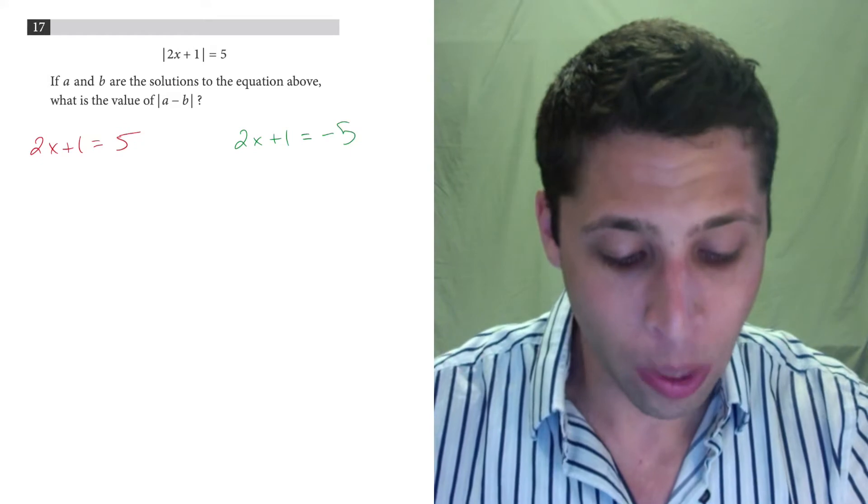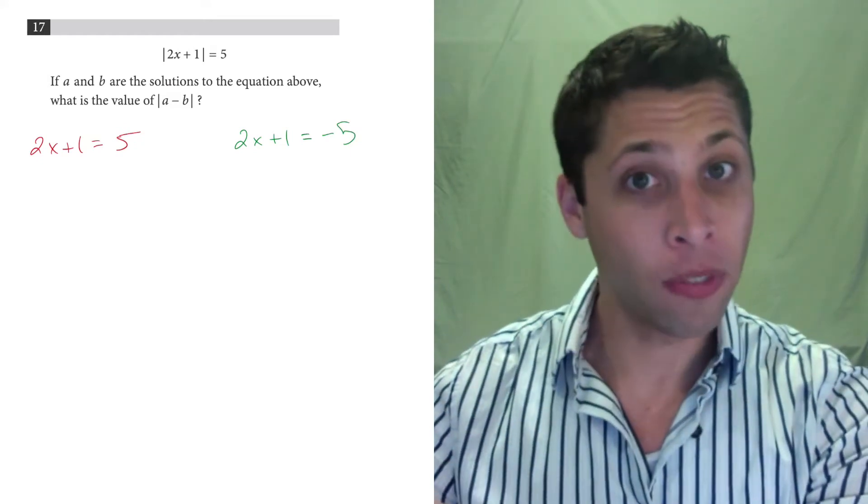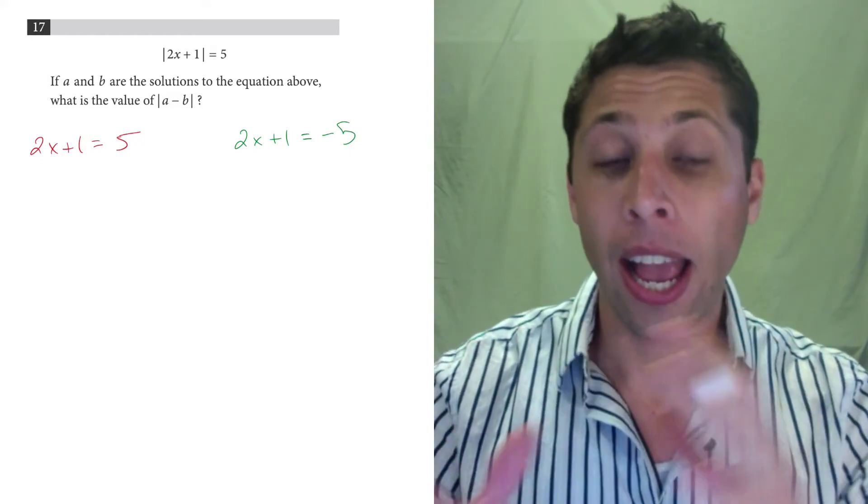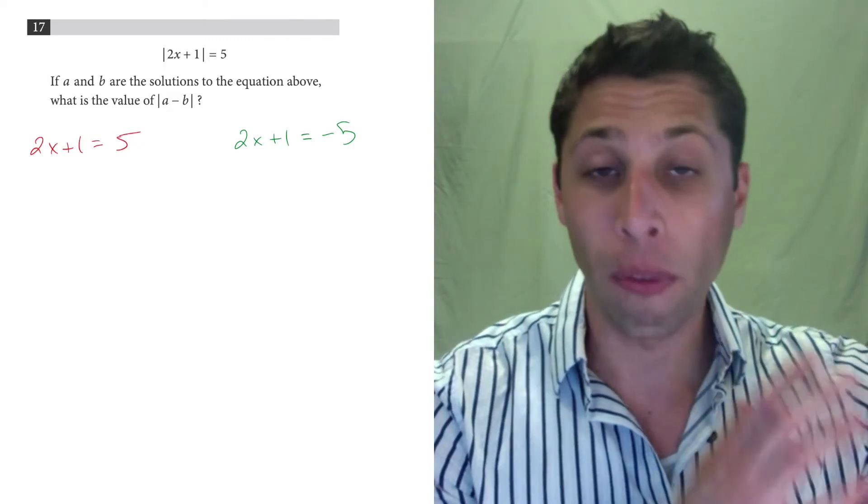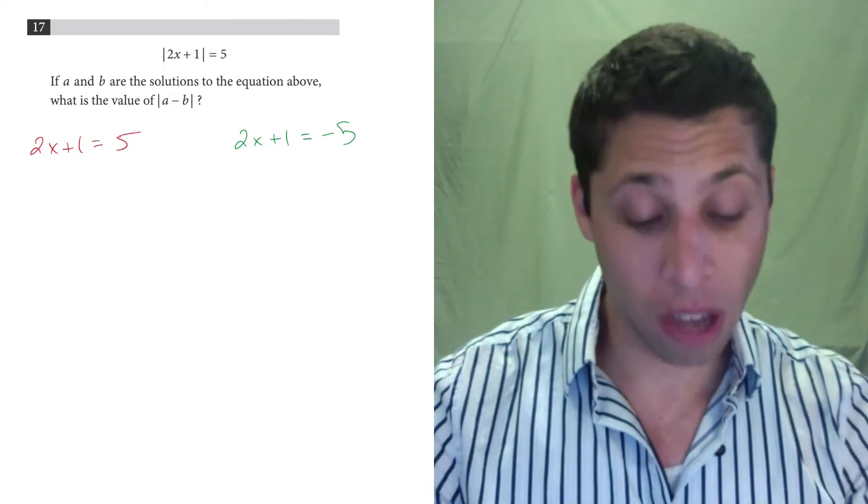So really, we have two equations. One that looks very much like what we were given, and another that is just the negative result of what we were given. And now we just solve them both.